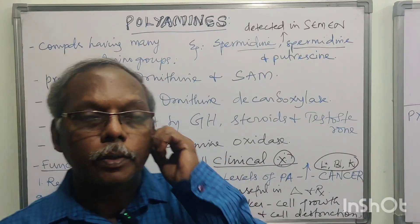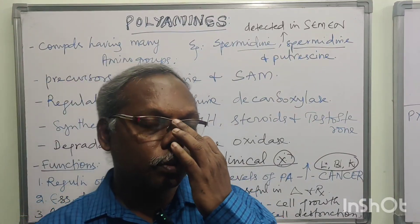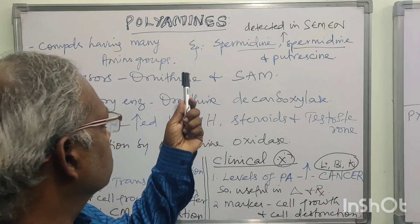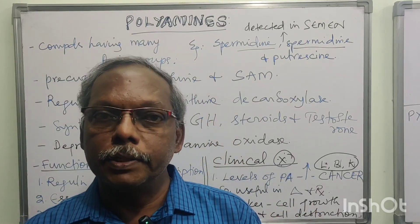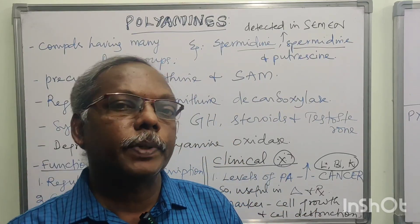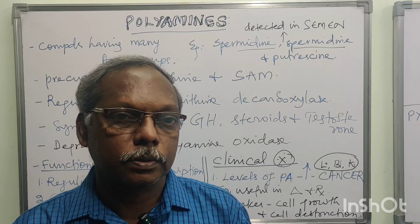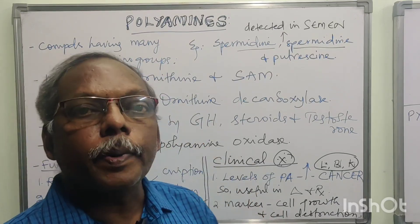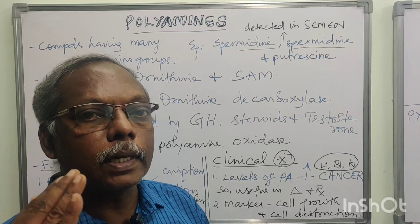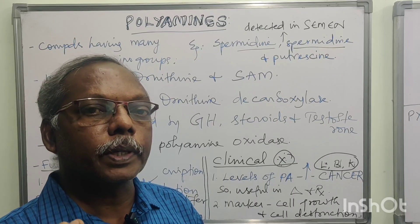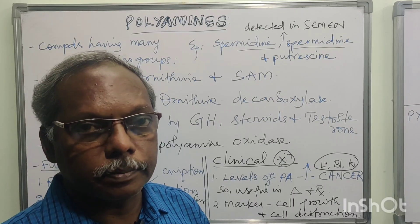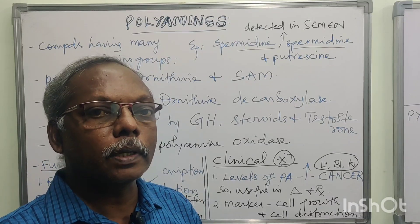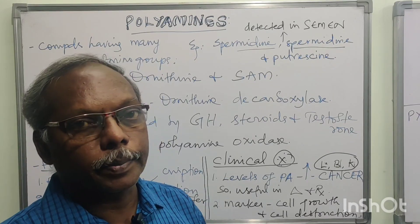Hi students, today we are going to discuss one more topic. I am giving 6 or 7 points for this topic, and all 7 points are important MCQs. The topic is polyamines. This is the last small topic of amino acid metabolism, and that is why most students skip it — but it is a very, very important topic.